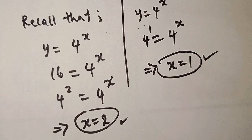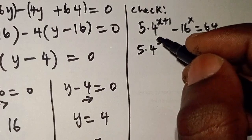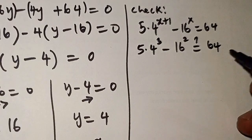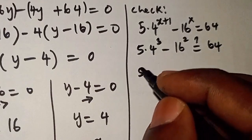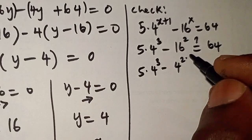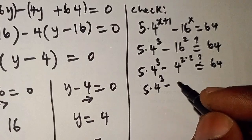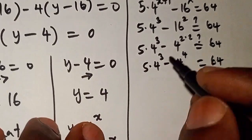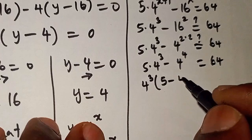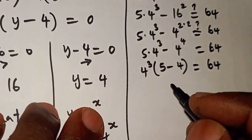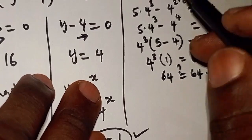Now let's check the validity of our solutions. For x equals 2: we have 5 times 4 to the power of 2 plus 1, that is 4 to the power of 3, minus 16 to the power of 2. We rewrite 16 as 4 squared, so 16 to the power of 2 is 4 to the power of 4. Factoring out 4 to the power of 3: we get 4 to the power of 3 times 5 minus 4 to the power of 1, which is 4 cubed times 4, giving 4 to the power of 3 equals 64. Left hand side equals right hand side — verified for x equals 2.